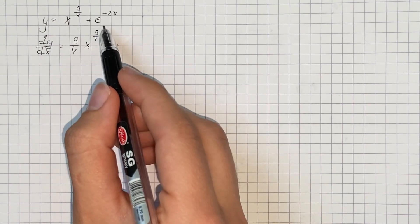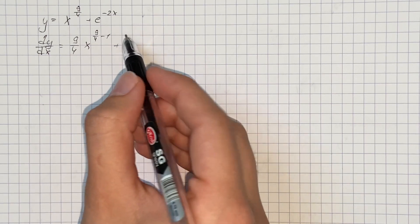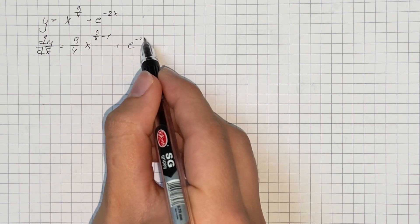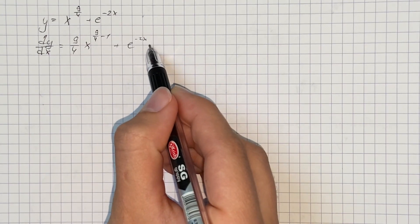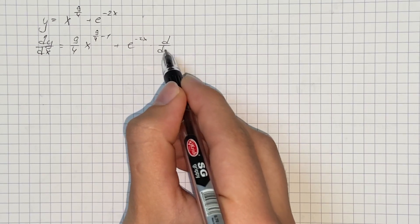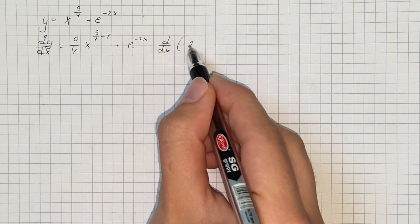And the derivative of the exponential function is going to be the function itself. But here we're going to use the chain rule, so we'll multiply by the derivative of the inner function, which is negative 2x.